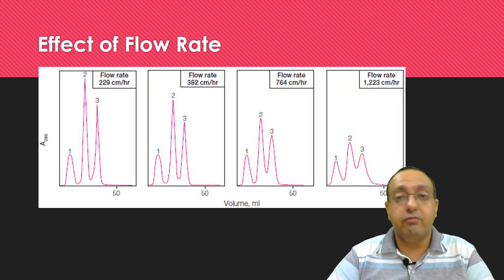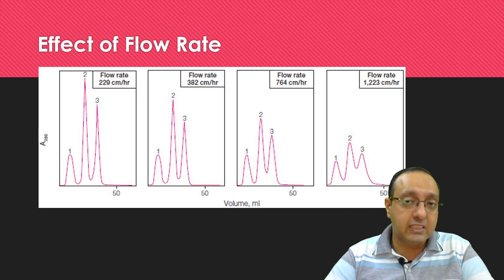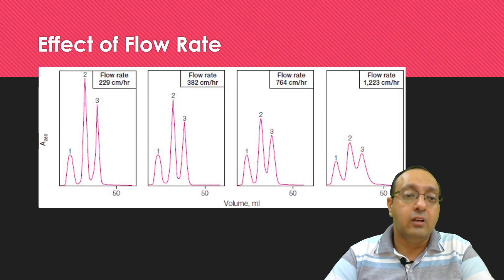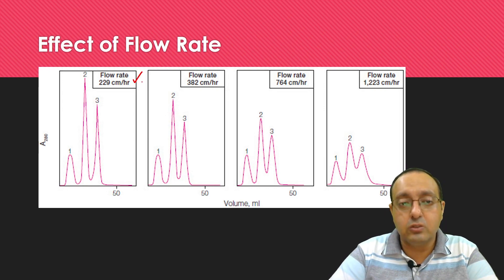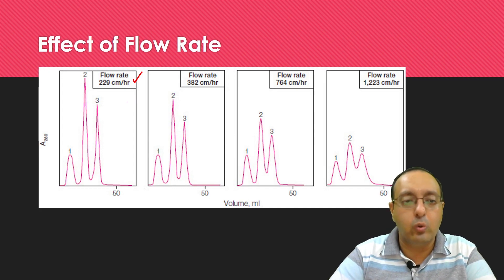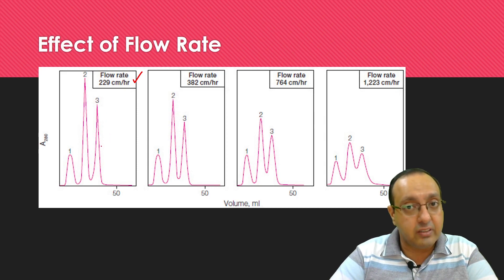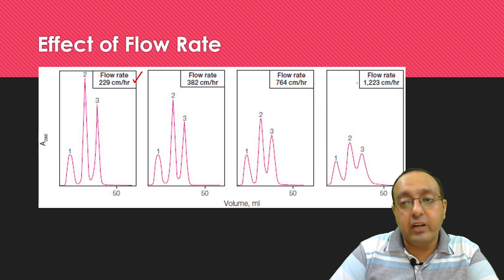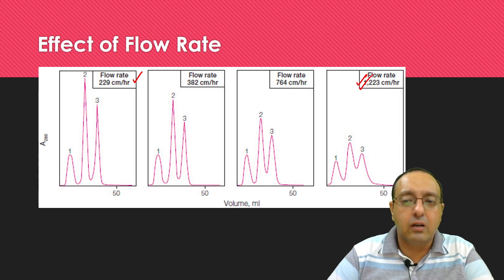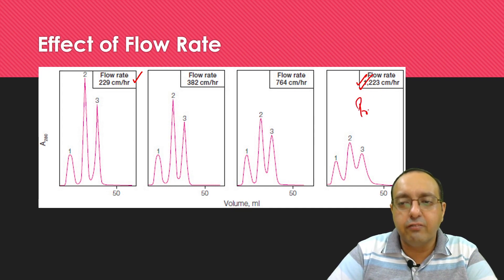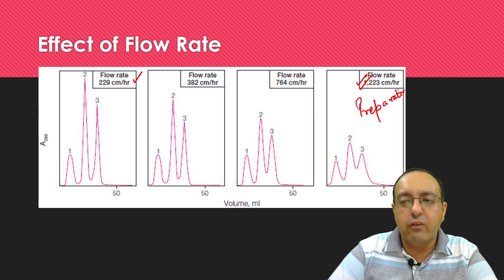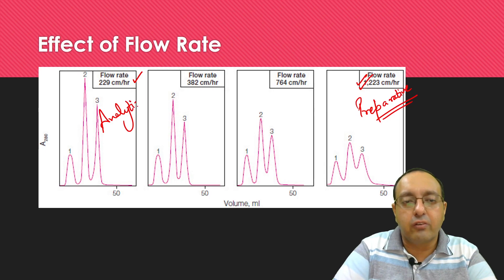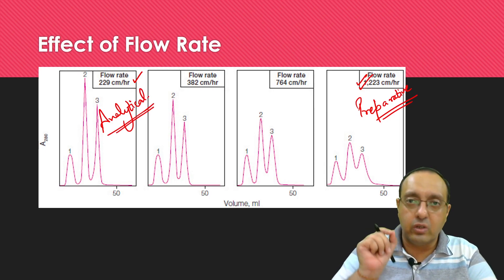Similarly, flow rate, the amount of solvent that is passing through the column per unit time, also has a very important effect on protein separation. Very low flow rates, for example, 229 cm per hour which is really slow, usually leads to better resolution and better separation of the proteins. Higher flow rates usually lead to kind of crude resolution, crude separation. So these are usually used for preparative work where we are okay with slightly less resolution, and this is used for analytical work where we really want to make sure that our protein is absolutely 100% pure.